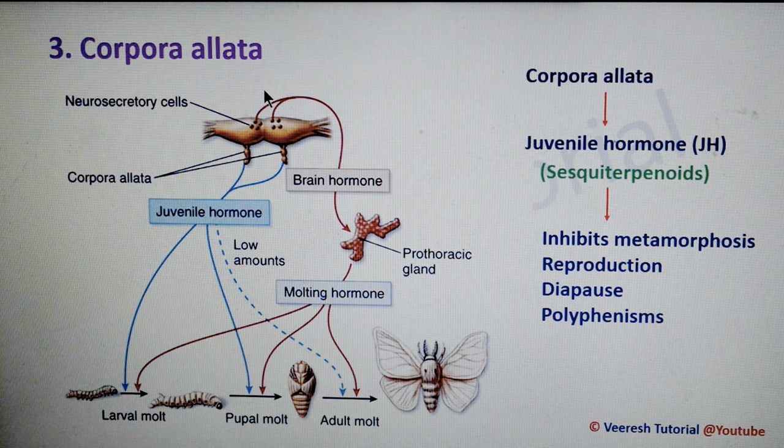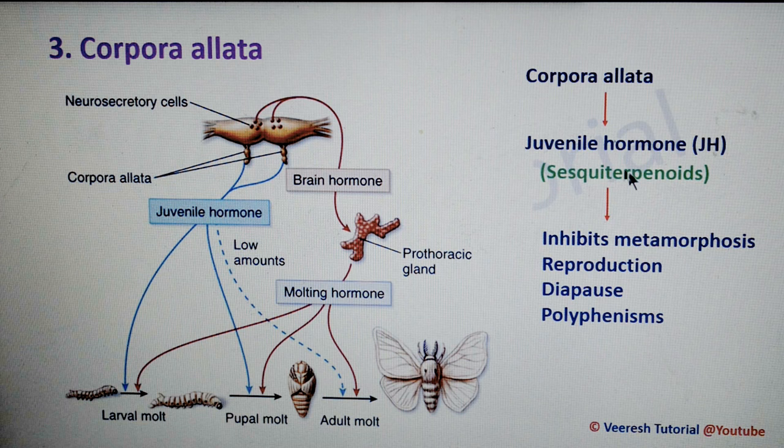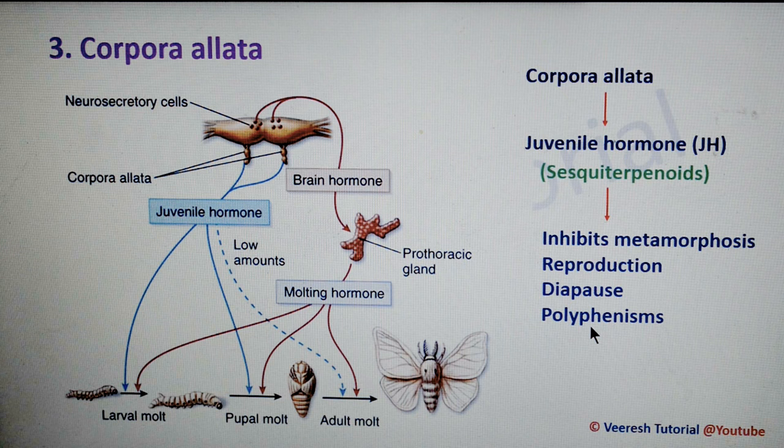The third one is corpora allata — paired glands present just behind the corpora cardiaca on either side of the esophagus. These secrete juvenile hormones, which are chemically sesquiterpenoids. Juvenile hormone inhibits metamorphosis and regulates reproduction, diapause, and polyphenisms. Polyphenism is the occurrence of different phenotypes within a species, governed by environmental conditions.